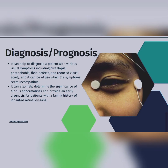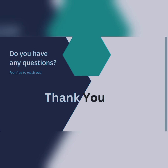Coming to diagnosis and prognosis, ERG can help to diagnose a patient with various visual symptoms including nyctalopia, photophobia, field defects, and reduced visual acuity, and it can be of use when the symptoms seem incompatible. It can also help to determine the significance of fundus abnormalities and provide an early diagnosis for patients with a family history of inherited retinal disease. That's it for this video. Thank you.